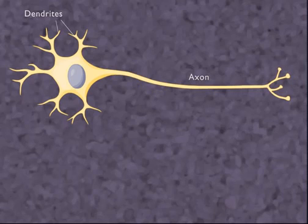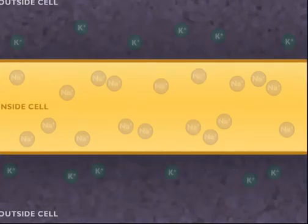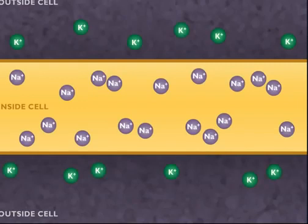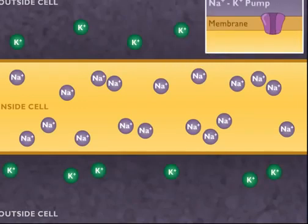When a neuron is at rest, a charge difference is maintained between the inside and outside of the cell. This charge difference is produced and maintained largely by active transport using sodium-potassium pumps. The pumps send sodium ions out of the cell and bring potassium ions in.